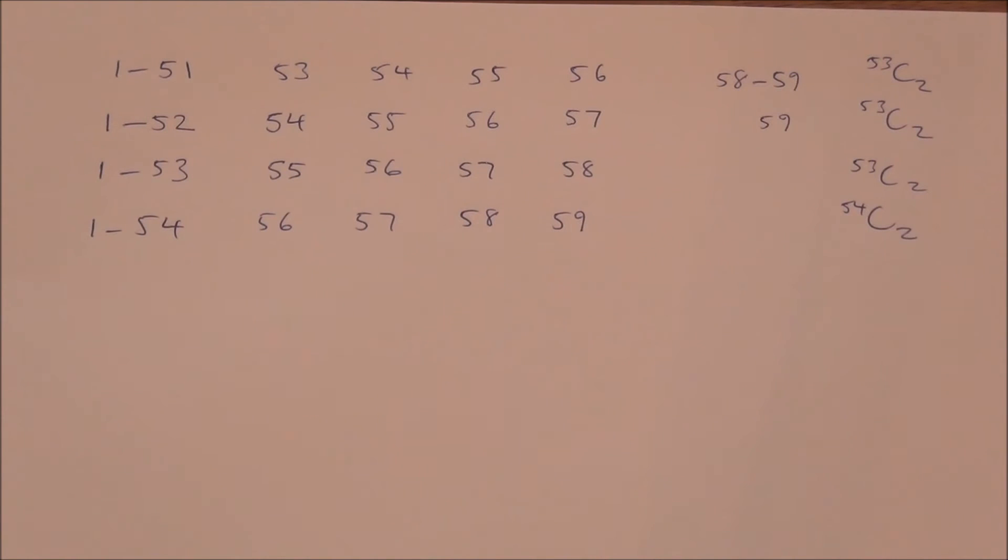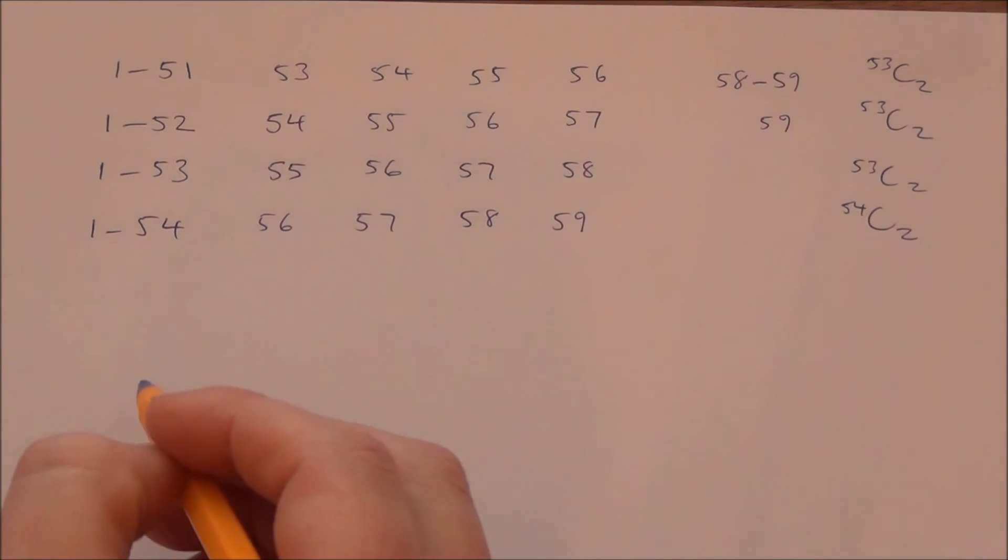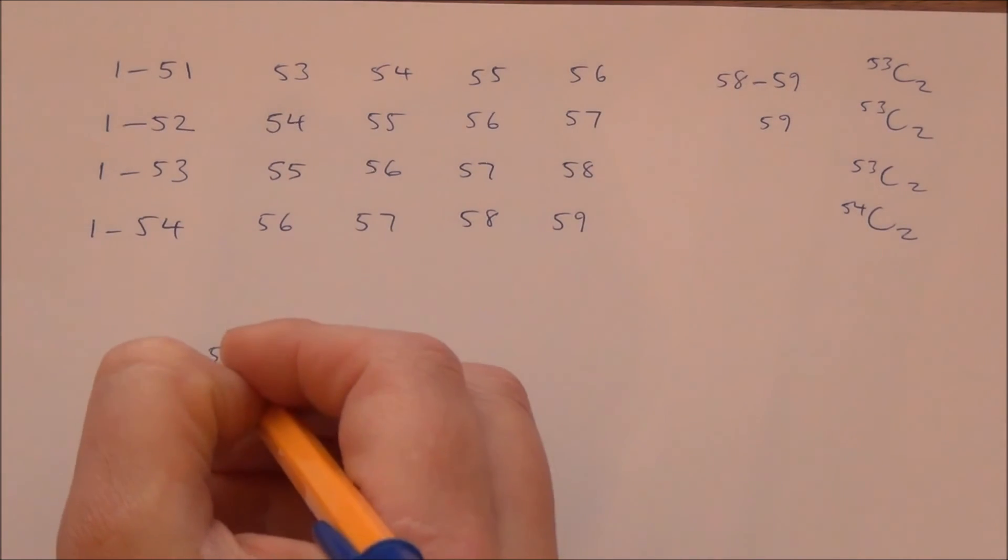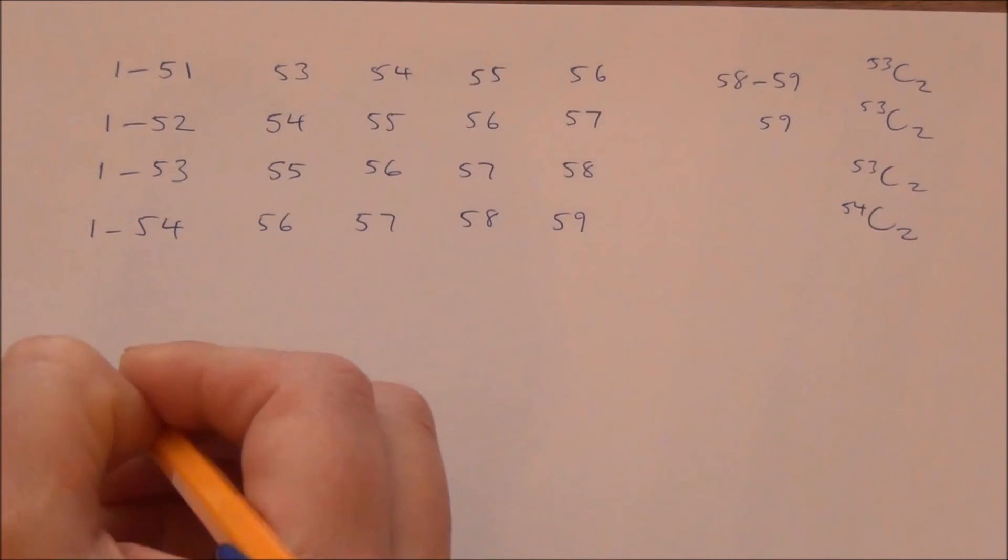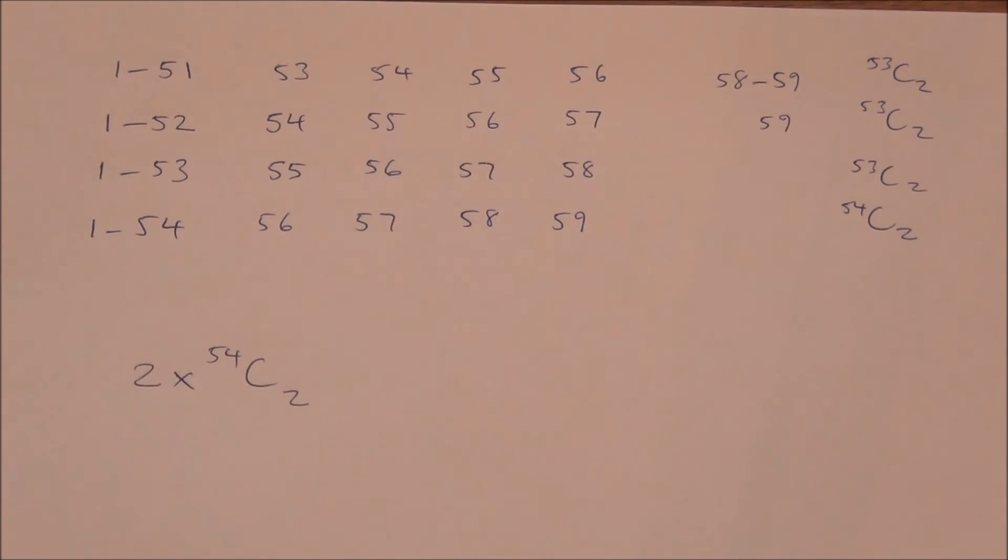So, the total number of possible combinations with four consecutive numbers are, well, the first and last one had 54 choose 2. So, there's two of those. There are 56 possible sequences in total.